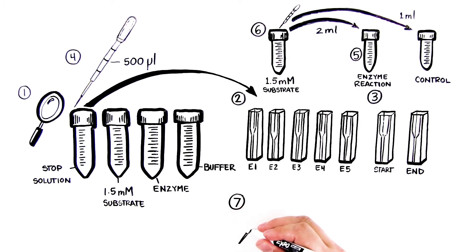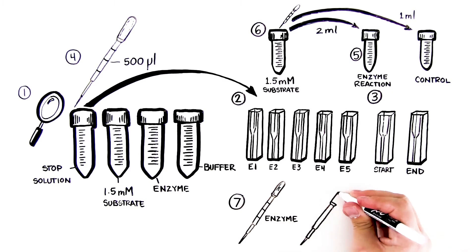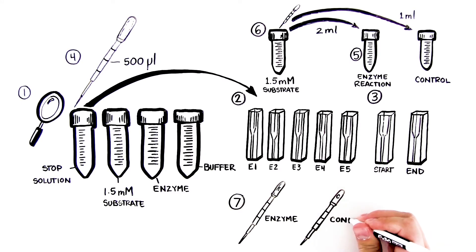Step 7: Label one DPTP E for enzyme and the other C for control. Only use the DPTP labeled E for enzyme reaction tube and the DPTP labeled C for control reaction tube.